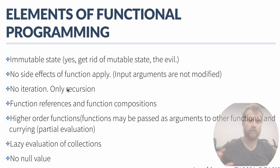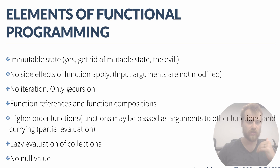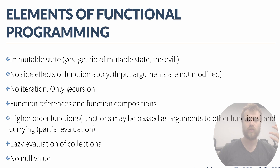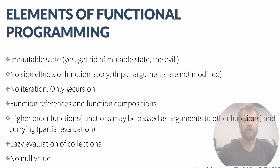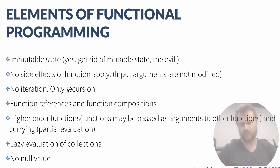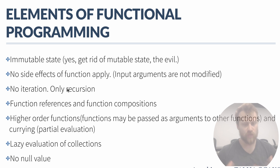You may construct bigger functions by composing them, by chaining them. The other thing is higher-order functions — that means functions may return other functions as return values. In object-oriented programming you may only return a value as the result of a method, but in functional programming you may return functions, and this is called partial evaluation, which delays the evaluation of the data.